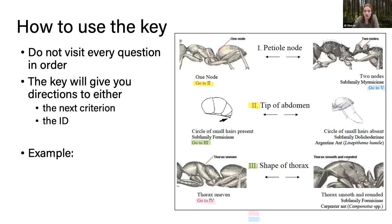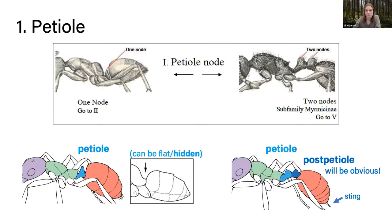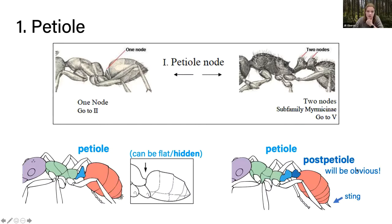Walking through the Cooper and Varela key step by step: the first step is looking for the petiole. The petiole can have one node or two. On the left we see blue for a single petiole, which can sometimes be hidden. Other ants have two nodes on the petiole — a petiole and a post-petiole — making a very long skinny waist. If they have a post-petiole, they also have a sting, so if you can see a sting that'll help clue you in as well.